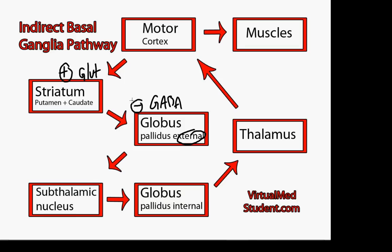But what happens in the indirect pathway is that the striatum is now inhibiting the external segment of the globus pallidus. So that means the external segment is no longer able to inhibit the subthalamic nucleus. What actually happens is we get less inhibition of the subthalamic nucleus.